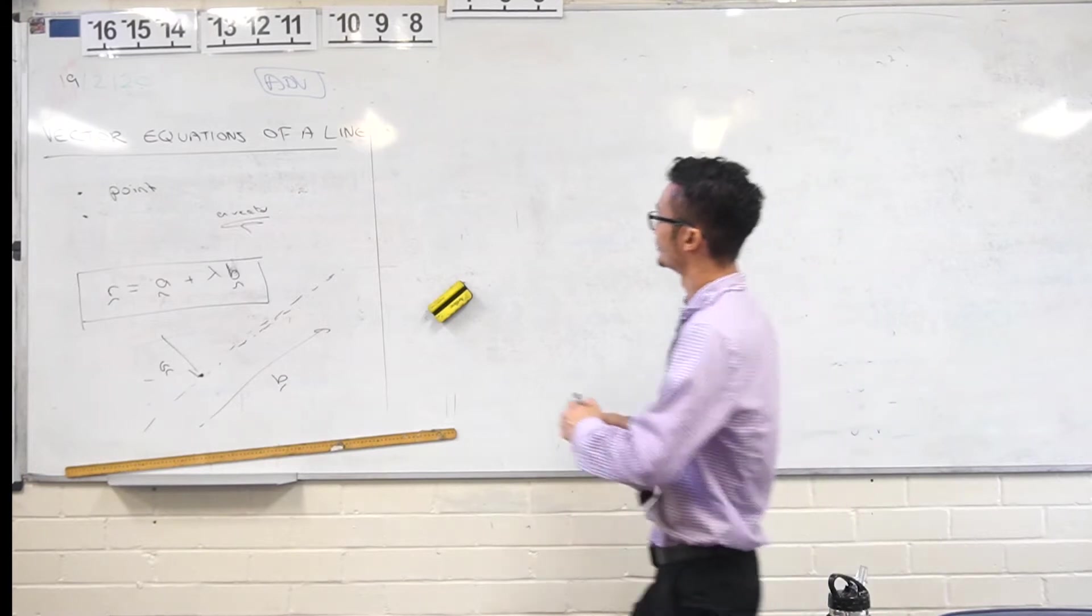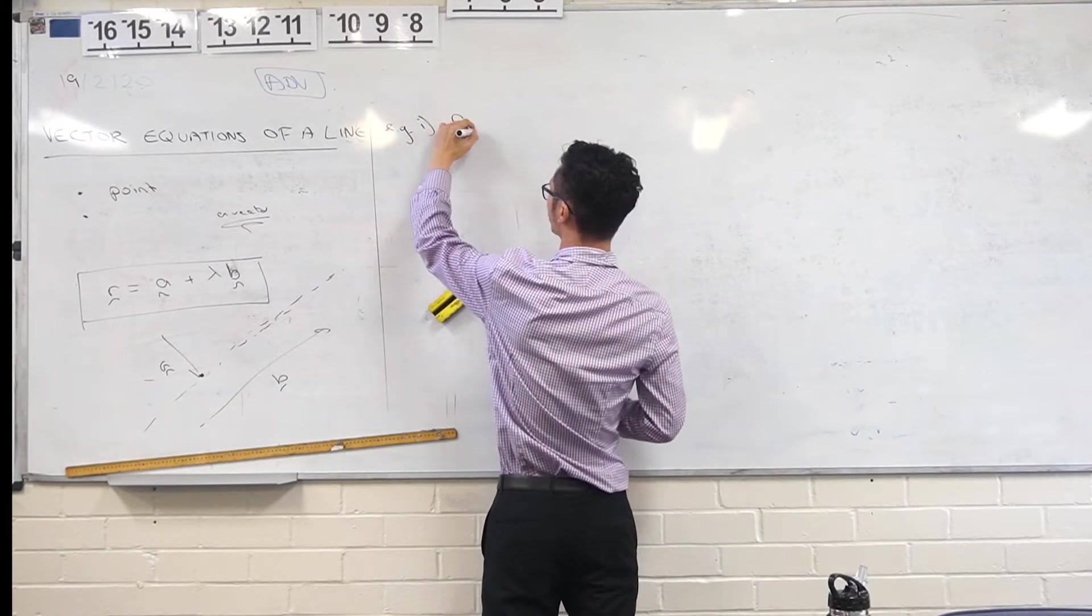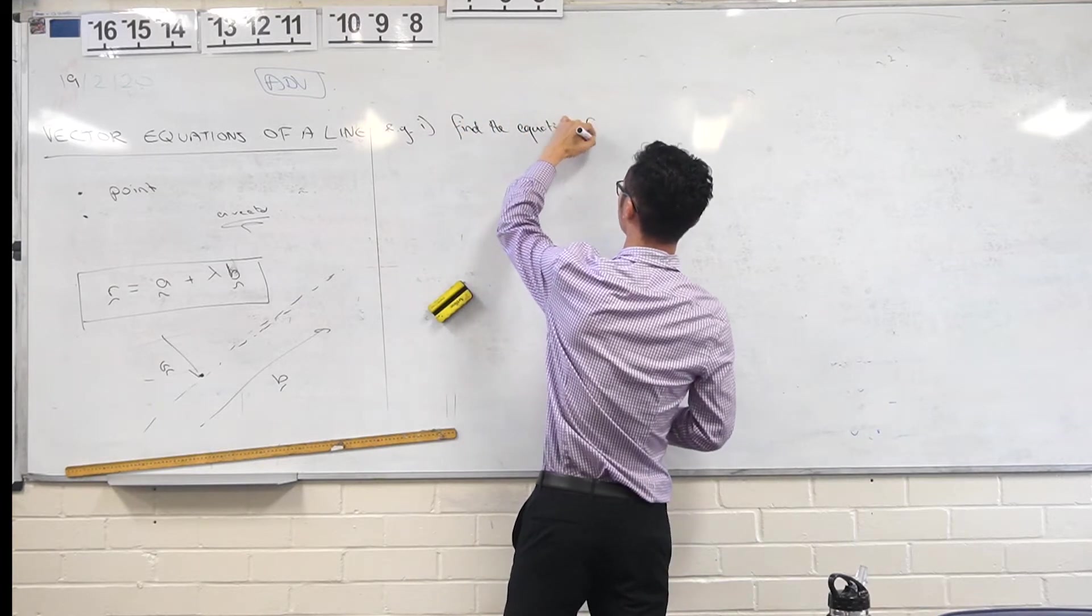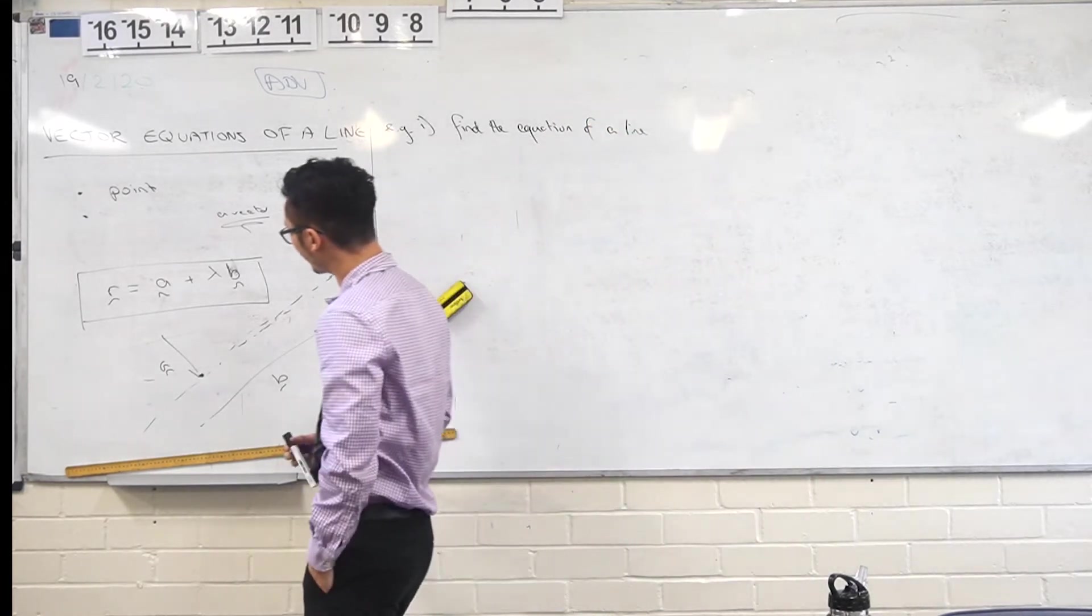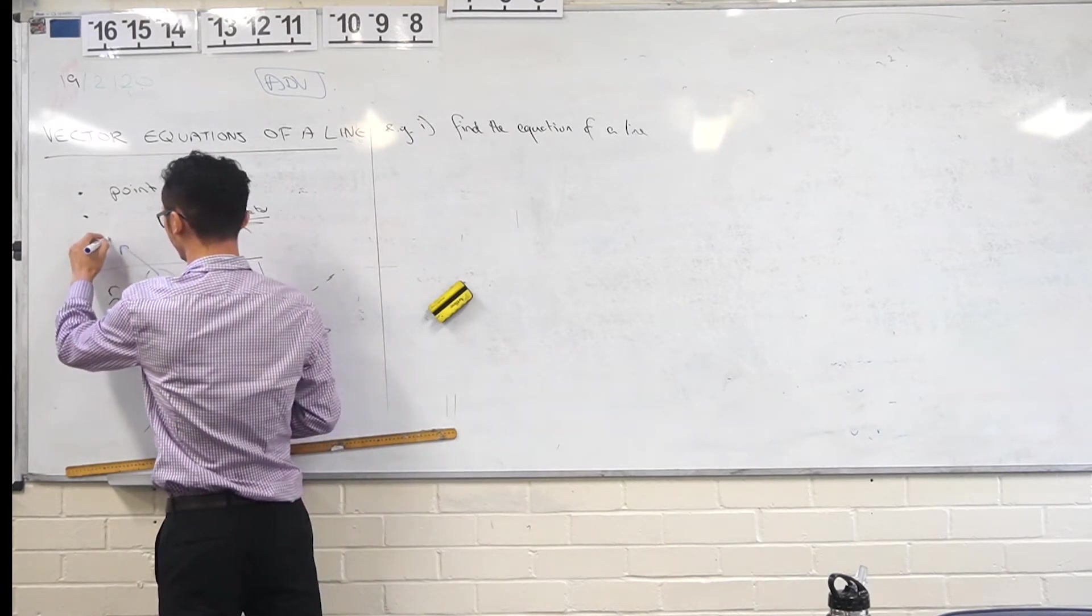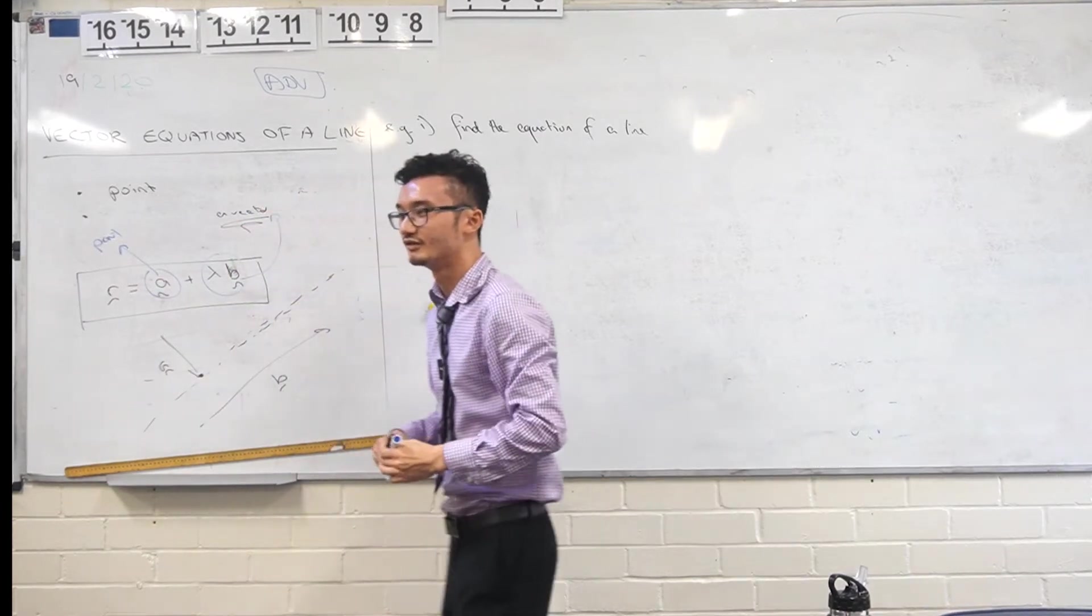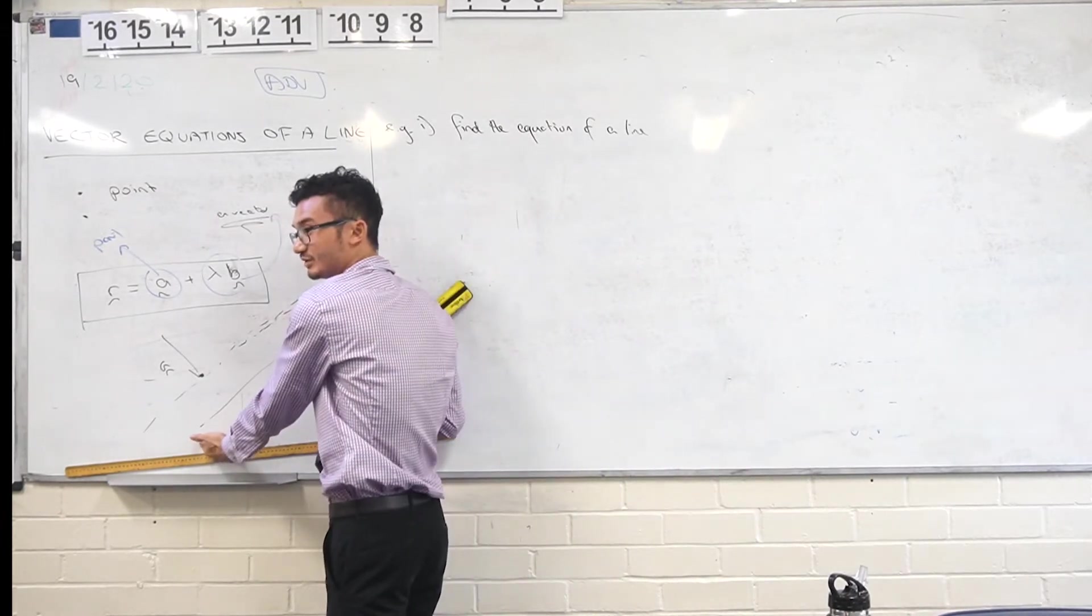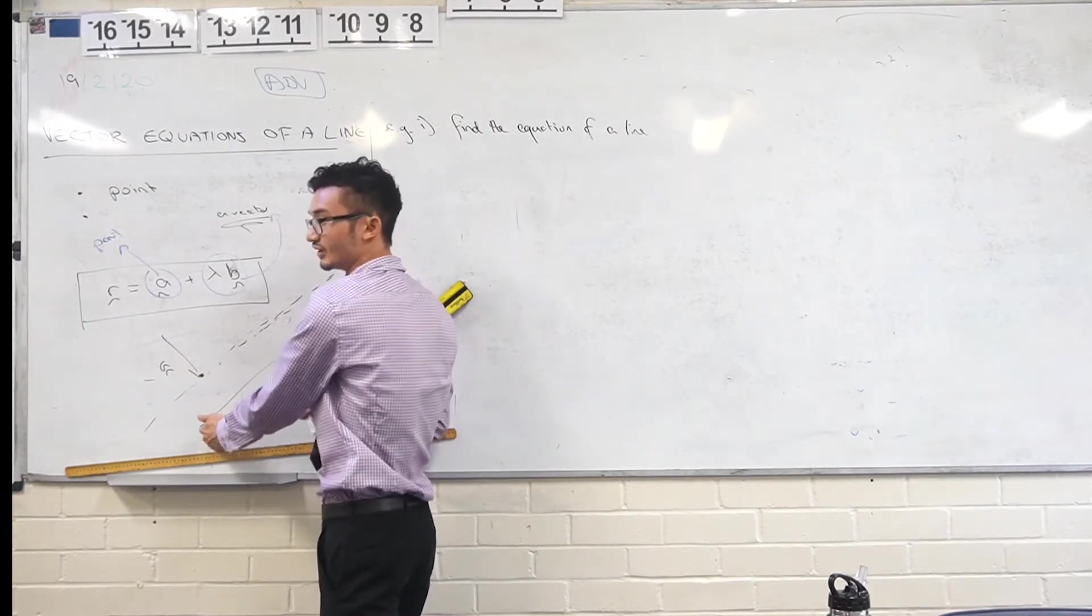So how do we actually answer questions like this? Well, common one, find the equation of a line. So I guess we can sort of think about lambda as a gradient, but really this is your point, and then this is your direction vector, because it's talking about the direction that's going, because it has to be in the same direction as B or like parallel. So this is like the point that we're looking at, this is the direction.